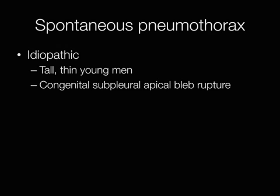Idiopathic pneumothorax typically occurs in thin, tall young men following rupture by a congenital subpleural apical bleb.